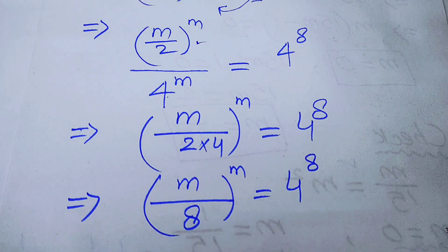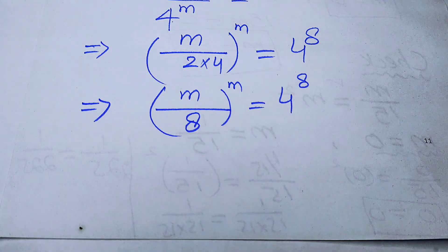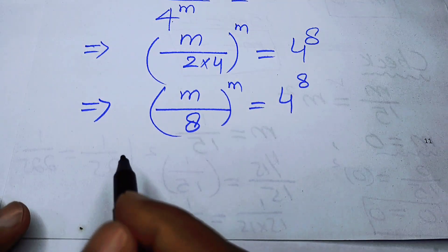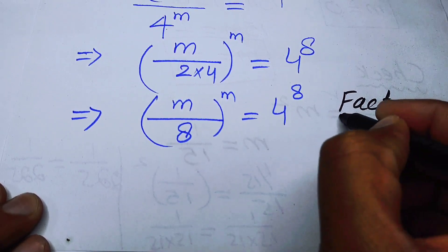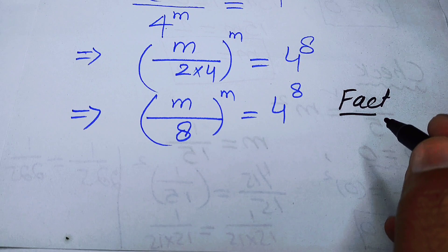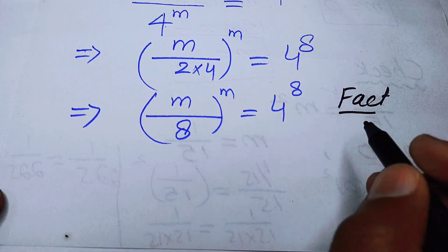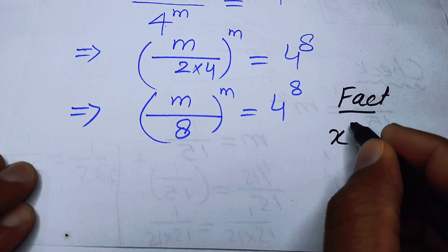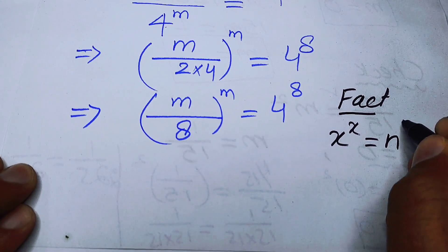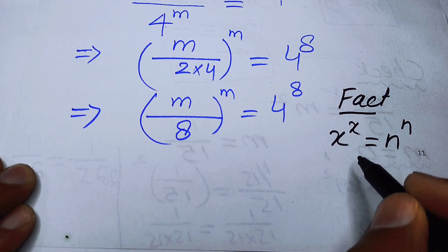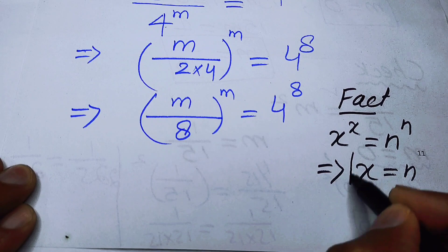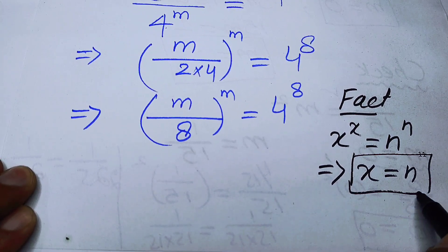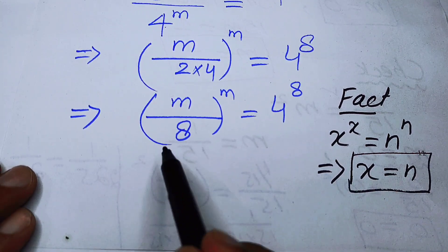Now, remember an important fact: if x^x = n^n, then x = n. We will use this fact to solve our equation by making the base and exponent the same on both sides.